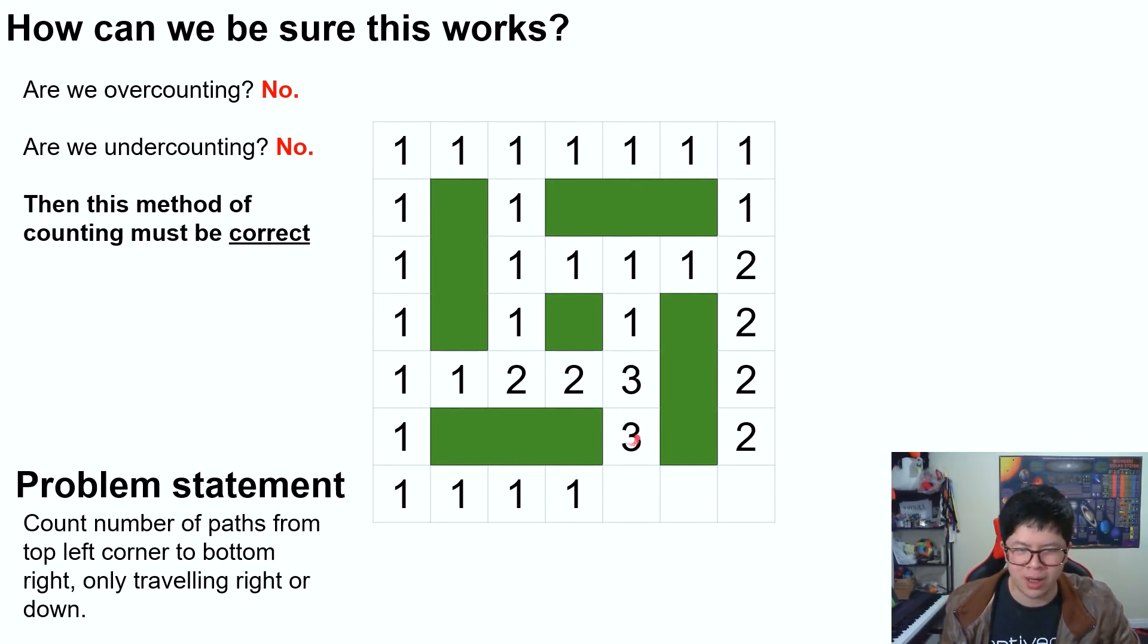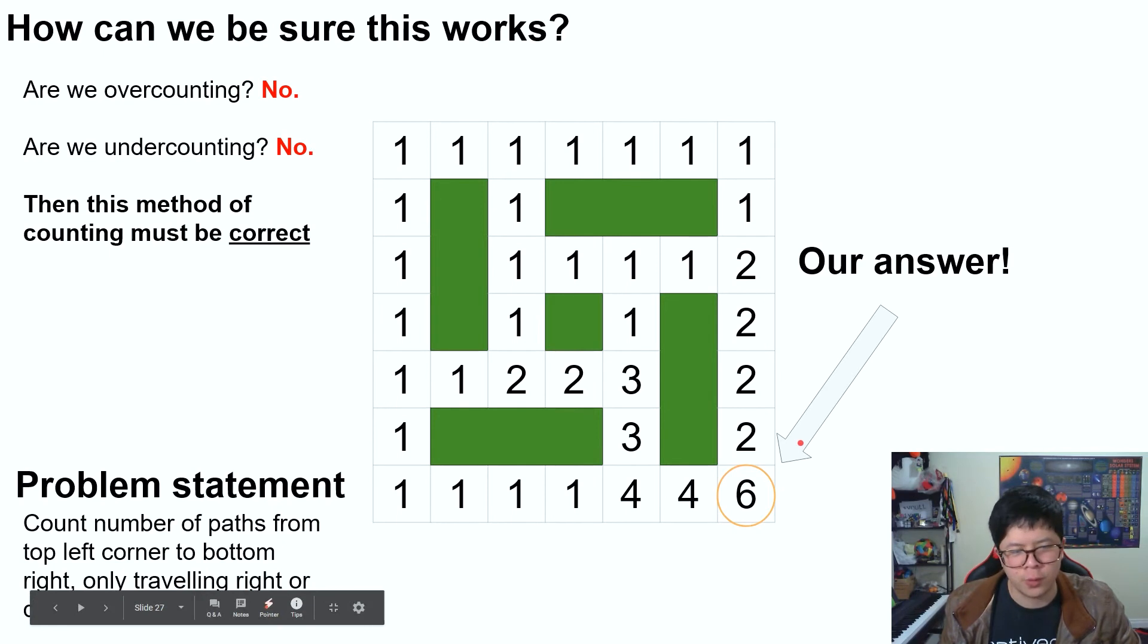To reiterate, this three right here is the result of zero plus three, this four right here is the result of one plus three, so on, so forth until we get our answer six, which corresponds to a brute force that you might have done if you were playing around with the problem on your own.